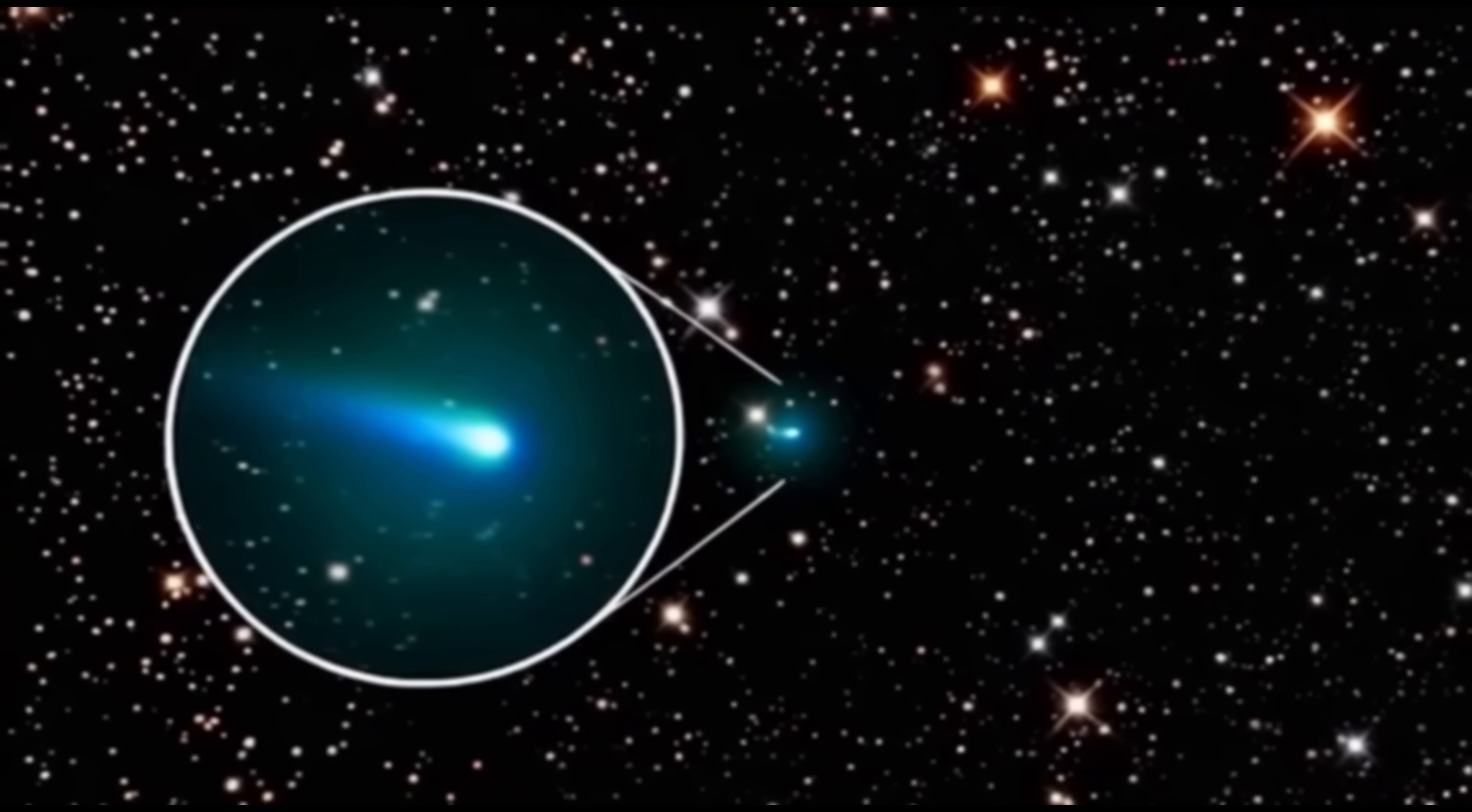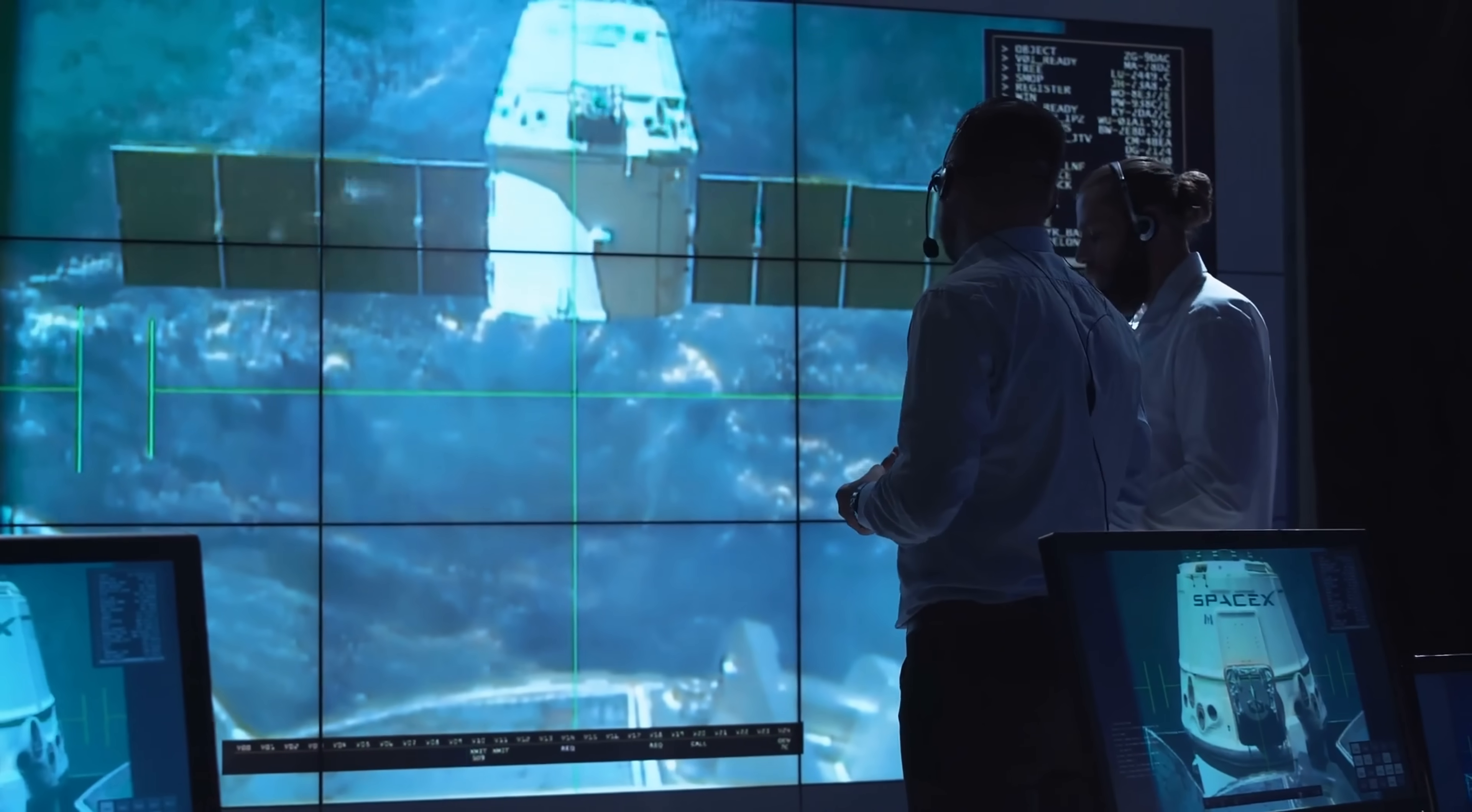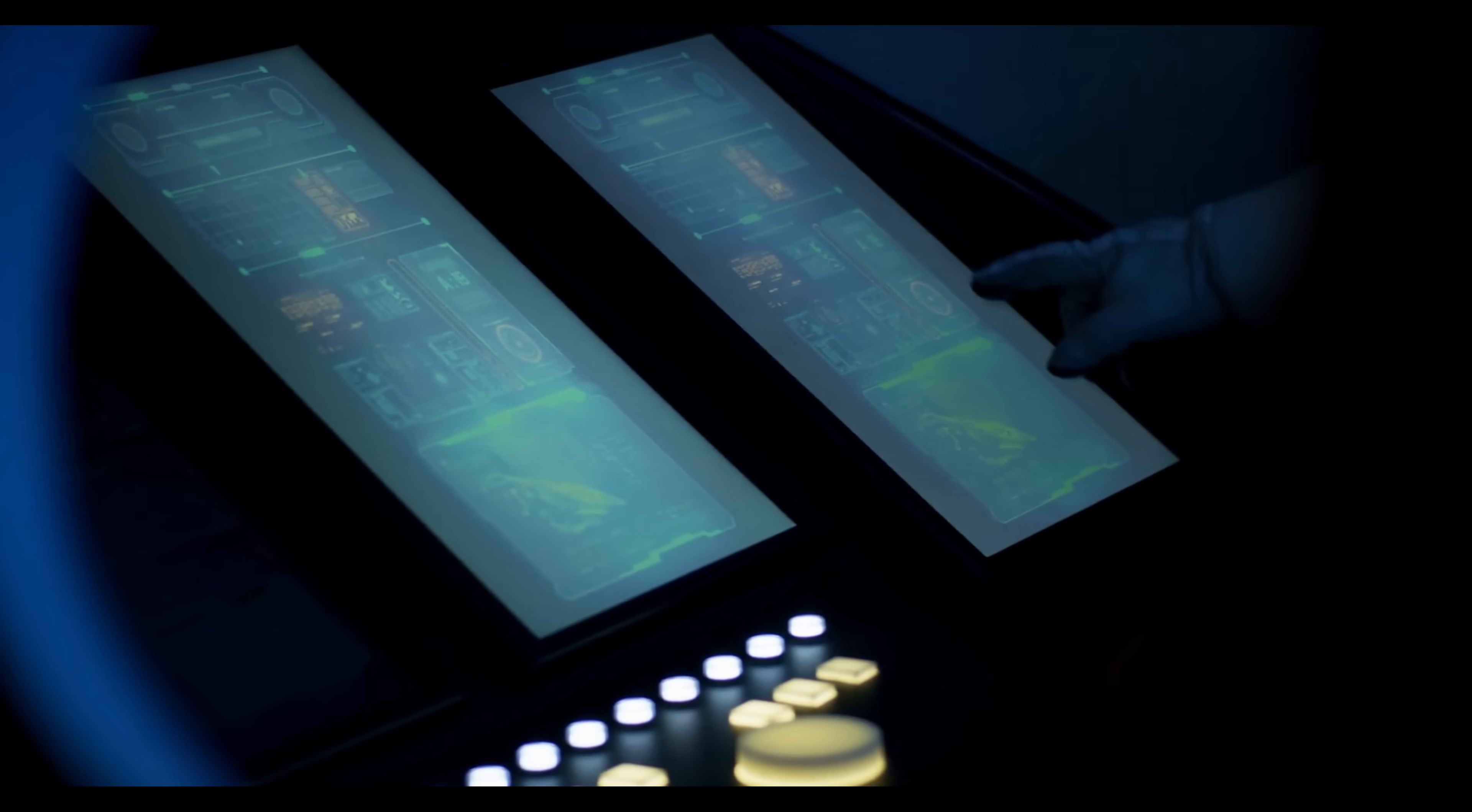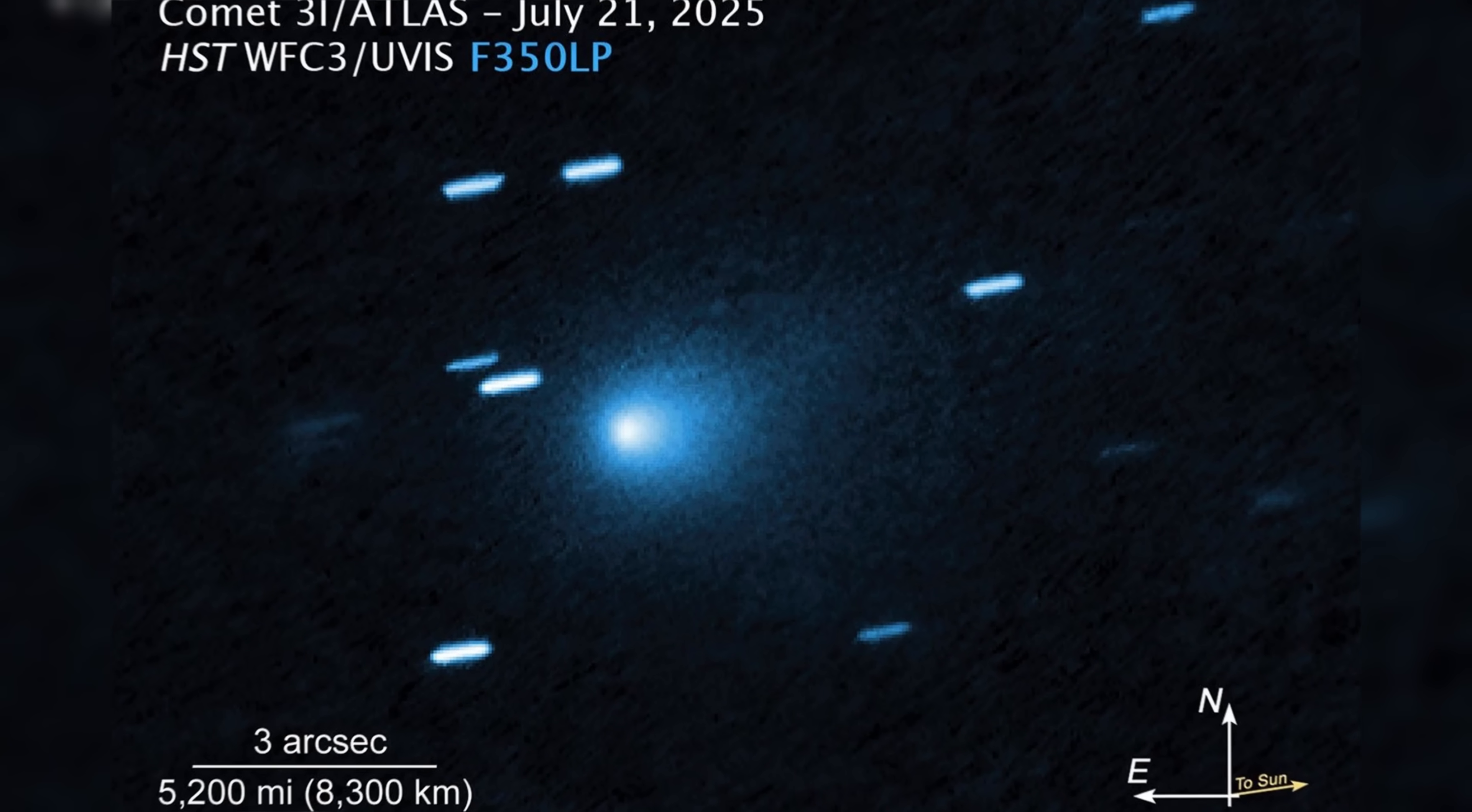The discovery of 3i Atlas unfolded gradually. Astronomers first captured images of it as early as May 2025, though at the time it was not recognized for what it was. Only in July of that year was it formally identified as an interstellar object.